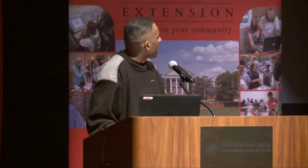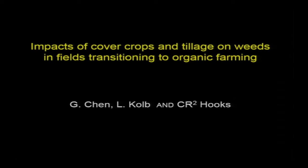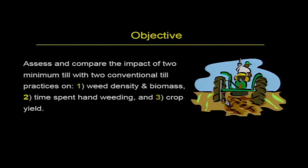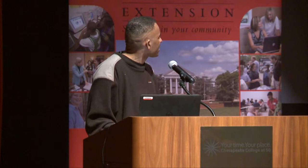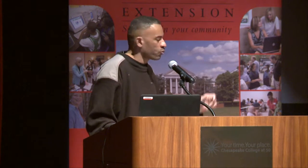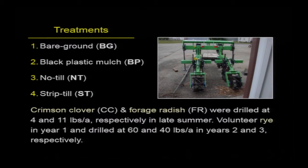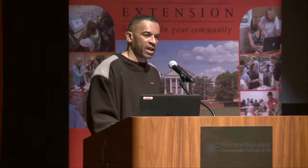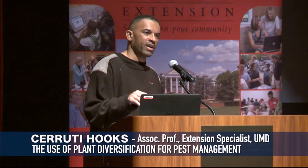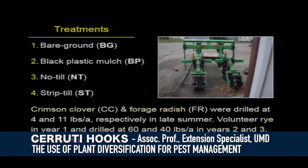This particular study was interested in examining the impact of cover crops and tillage on weeds in a field transition to organic farming. This was a multi-disciplinary study. We were interested in assessing and comparing the impact of two minimum-till practices with two conventional-till practices on weeds, how much time it cost for hand weeding, and crop yield. We set up four treatments: conventional till with bare ground and black plastic mulch, and conservation tillage with no-till versus strip-till. The study ran for four years: first year eggplant, second year sweet corn, then eggplant, then sweet corn again. All plots started with a cocktail mixture of cover crops — a combination of crimson clover, forage radish, and rye.